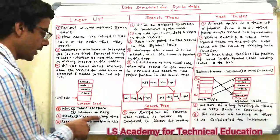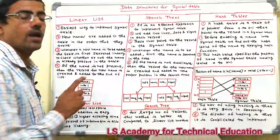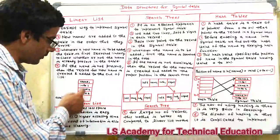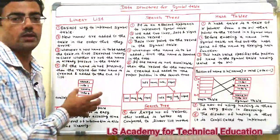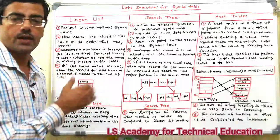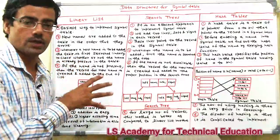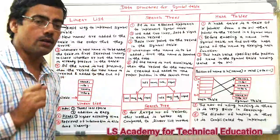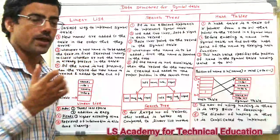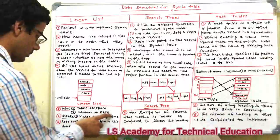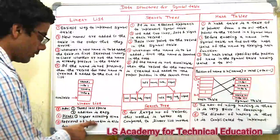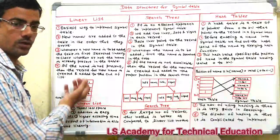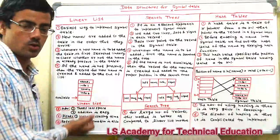The disadvantage is higher accessing time. Since the retrieval of information is done linearly — checking records one by one — data retrieval takes more time. The retrieval of information is done linearly, which is not efficient when the number of records is large.